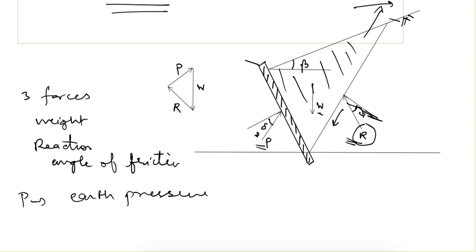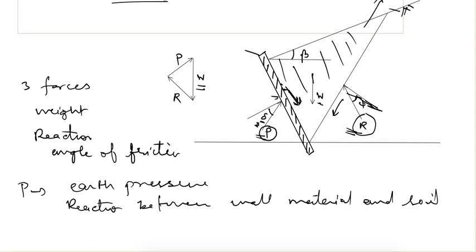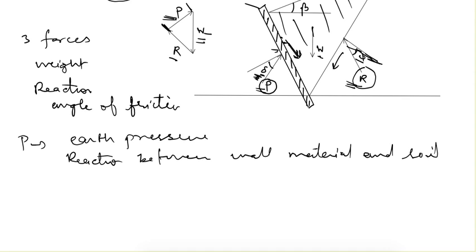The force P is the reaction between the wall material and the soil. The soil tries to move downward and the wall friction opposes that movement, so the resultant reaction P makes an angle delta from the normal of the wall. A force triangle is formed: we know the magnitude and direction of W, the direction of R (from the angle of friction phi), and the direction and location of P (from delta and H/3 from the base). This gives us the value of the earth pressure.